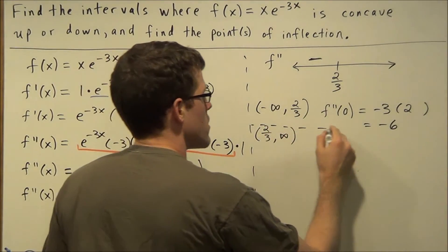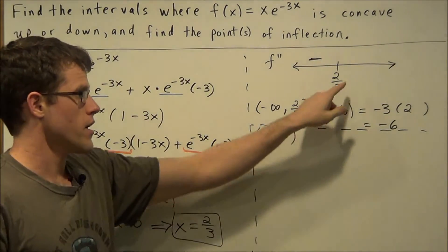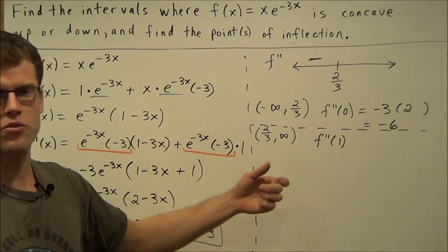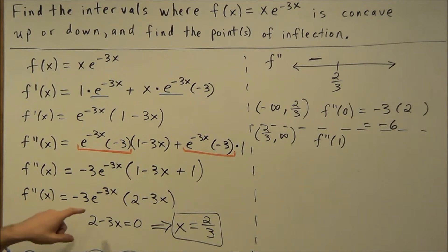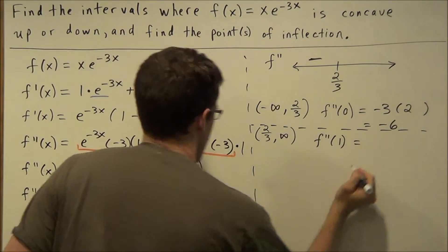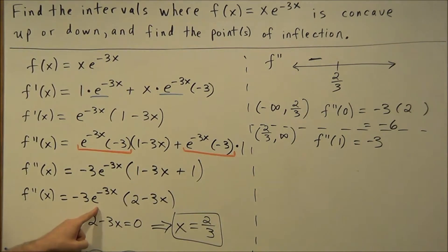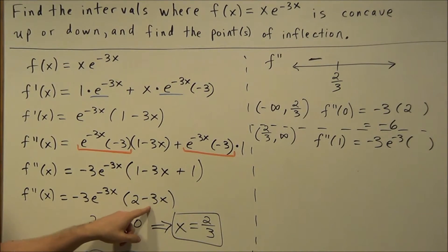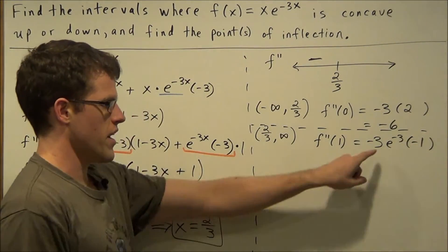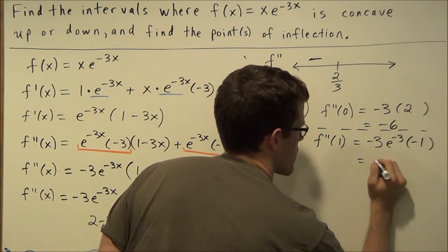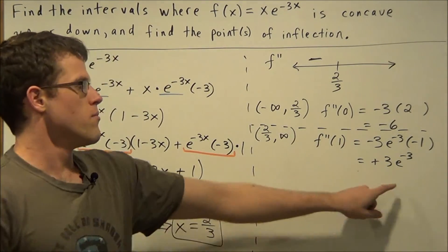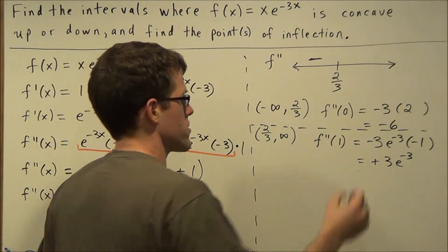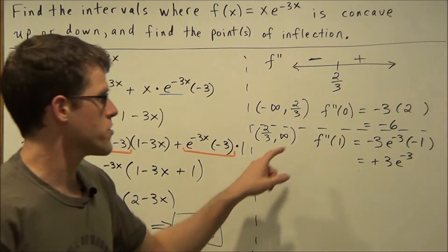Next we plug in a value from the second interval. Greater than 2 thirds, it makes sense to plug in 1 — the goal is to use the easiest number we can think of, but any number greater than 2 thirds will work. Plugging 1 into the second derivative, we have negative 3 times e to the negative 3, times 2 minus 3 times 1, which is negative 1. A negative times a negative is positive, so we get positive 3 e to the negative 3. All that matters is that this is a positive value, so we label the interval from 2 thirds to infinity as positive.